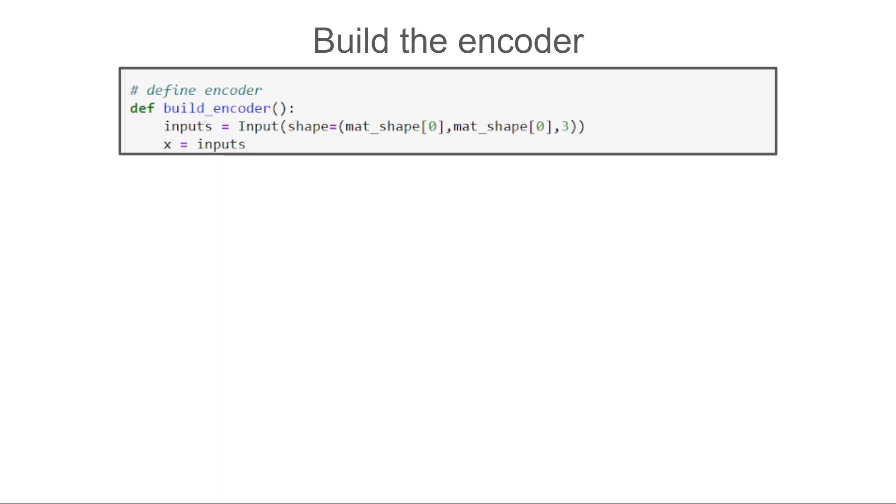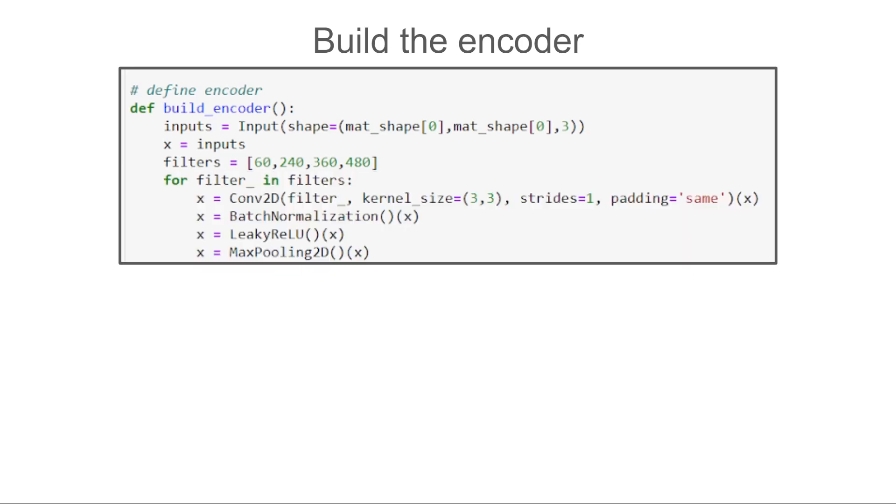Again for the loop that comes next. We use a for loop to define the conv layers. Each layer contains the actual convolution, batch normalization, and leaky ReLU activation. Afterwards we perform max pooling to reduce the size of the data.